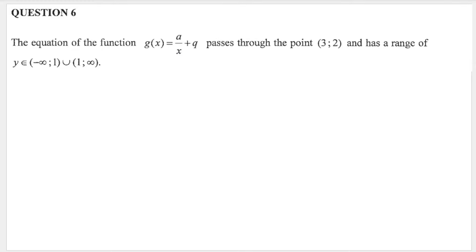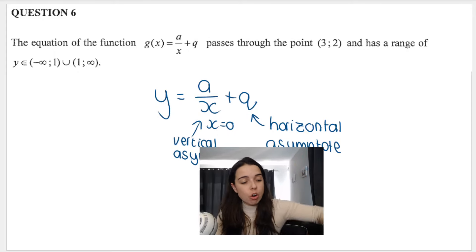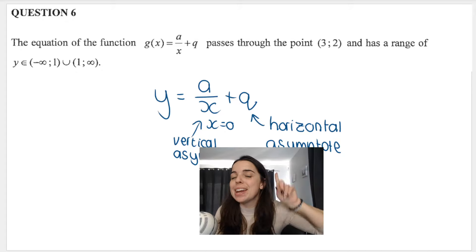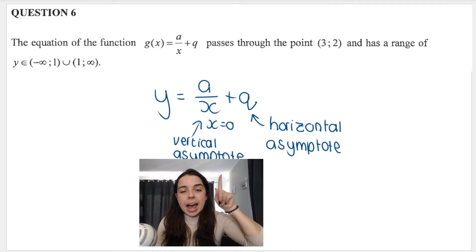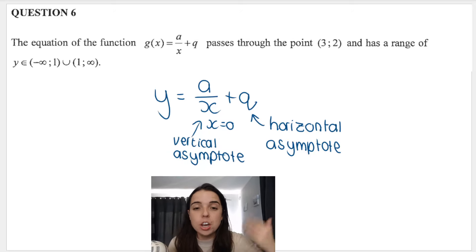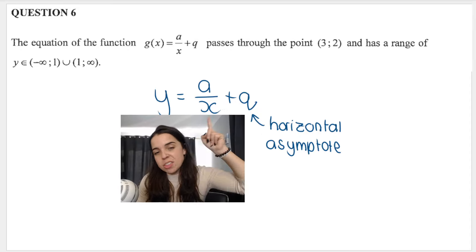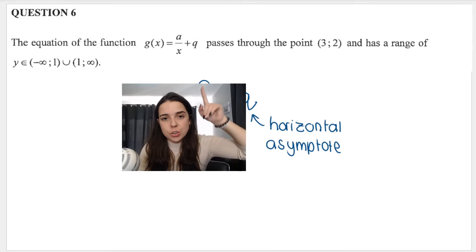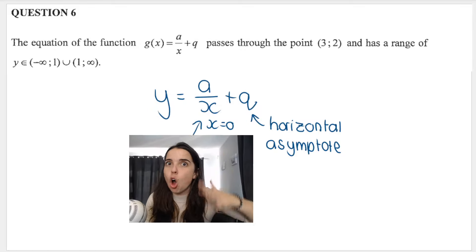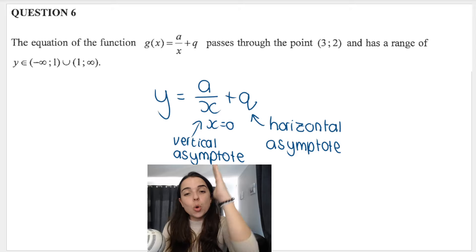As soon as you see a divide-by-x, we're talking about a hyperbola. So looking at this equation, 'a' determines the shape of the graph — we'll get to that later. 'q' is the horizontal asymptote, where the graph approaches but never touches or crosses. And x equals 0 is the vertical asymptote, because anything divided by 0 is undefined.